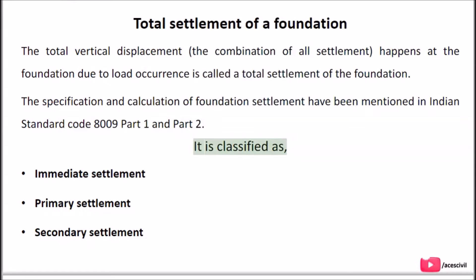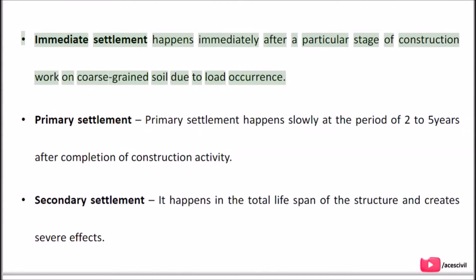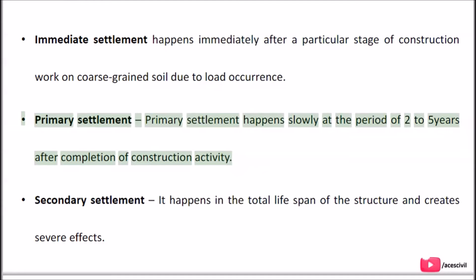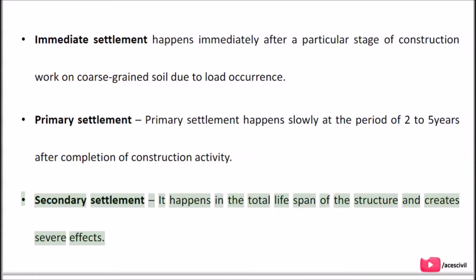Total settlement is classified as: Immediate settlement, Primary settlement, and Secondary settlement. Immediate settlement happens immediately after a particular stage of construction work on coarse-grained soil due to load occurrence. Primary settlement happens slowly over a period of 2–5 years after completion of construction activity. Secondary settlement happens over the total lifespan of the structure and creates severe effects.